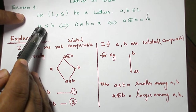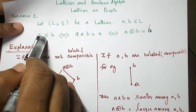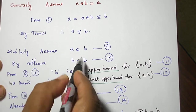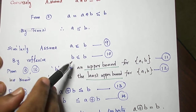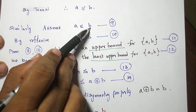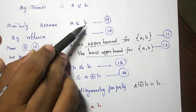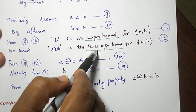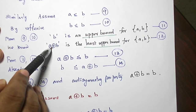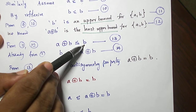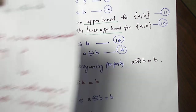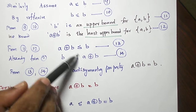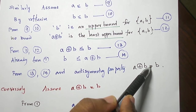Now let us prove the second equivalence: A ≤ B if and only if A∨B = B. First, assume A ≤ B. Using the reflexive property we have B ≤ B. From these two inequalities, B is an upper bound for the set {A, B}. The standard least upper bound is A∨B. Combining these two statements, A∨B is smaller and B is greater, so we write A∨B ≤ B. Already we have B ≤ A∨B. Using the anti-symmetry property we conclude A∨B = B.